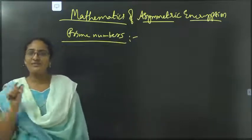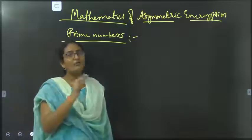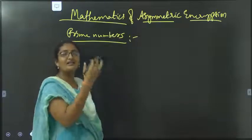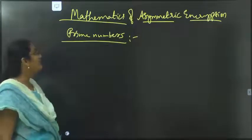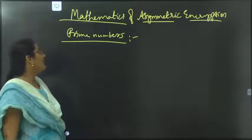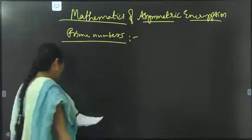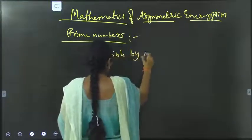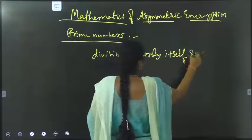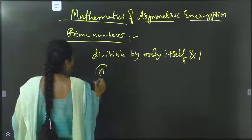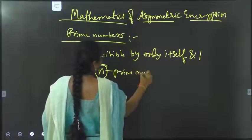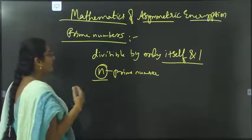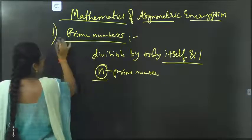We know there is data and there are problems for data, so we take the help of cryptography. We are now at a stage where we use either symmetric or asymmetric algorithms. The last topic to finish Unit 3 is Mathematics of Asymmetric Encryption. The first point in this topic is prime numbers. A prime number n is divisible only by 1 and itself.